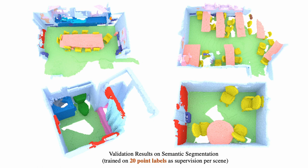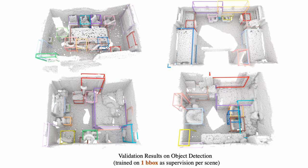We show other data-efficient 3D scene understanding tasks. Here are some semantic segmentation predictions on ScanNet, trained with only 20 points annotated per scene. Here we show results for object detection on ScanNet, where the training data has only one bounding box labeled per scene. Please check out our paper for many other benchmark results and analysis.